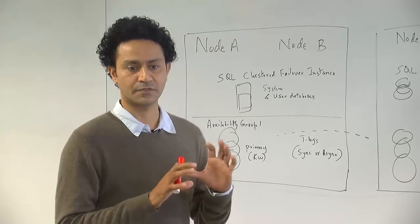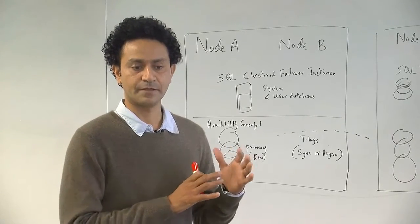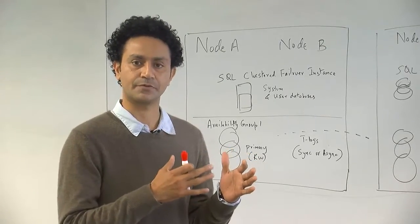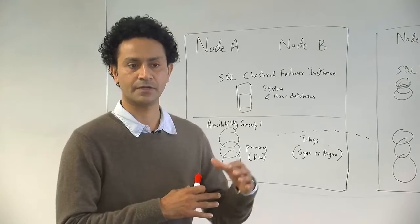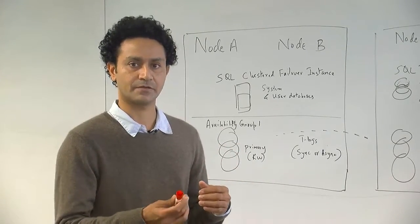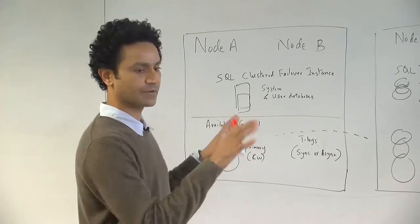When you look at SQL Server 2012 itself, basically it supports one primary and four secondary databases. Primary databases are primarily read-write databases and secondary databases are read-only. So if you look at a typical configuration: